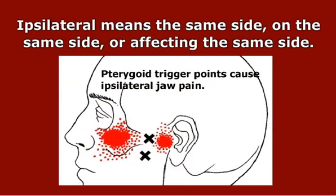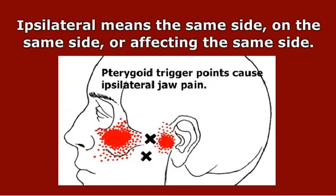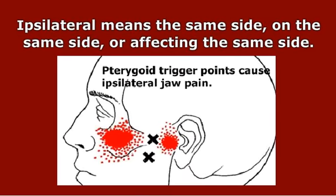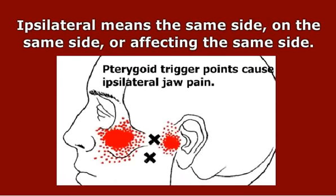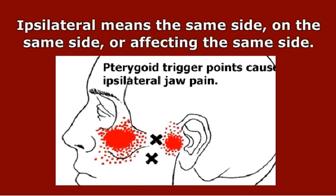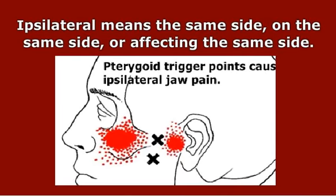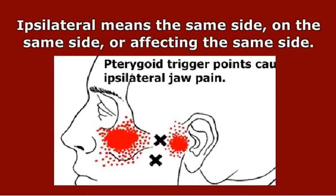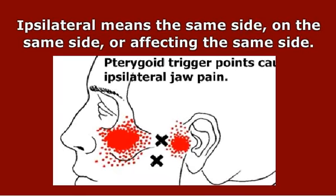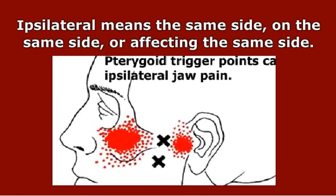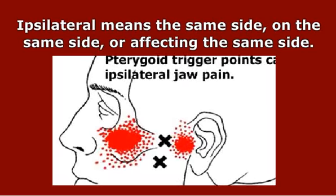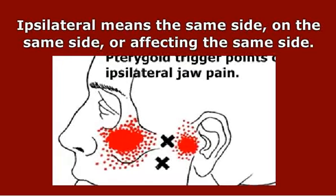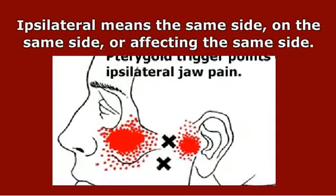Definition of ipsilateral. Ipsilateral means the same side, on the same side, or affecting the same side. My right cheekbone is ipsilateral to my right ear. Another word for ipsilateral is homolateral. What if you were performing a lunge exercise while holding one dumbbell? If I told you to hold the dumbbell in your ipsilateral hand, I would mean that you should hold it on the same side as your working leg. Ipsilateral is important in medicine as a shorthand to mean something occurring on the same side as a reference point.